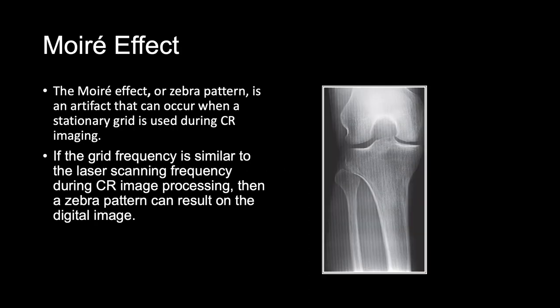The moire effect, or zebra pattern, is an artifact that can occur when a stationary grid is used during CR imaging. If the grid frequency is similar to the laser scanning frequency during CR image processing, a zebra pattern can result on the digital image. Use of a higher grid frequency or a moving grid with CR digital imaging eliminates this type of error. In addition, if a grid cassette is placed in the Bucky, imaging with the double grids also creates a zebra pattern on the radiograph.